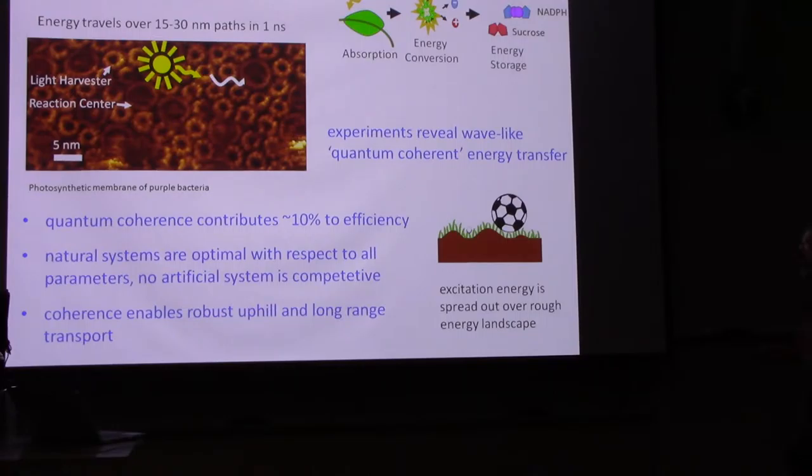Now, there's a lot of theoretical work done on this. A lot of theoretical work indicates that this coherence contributes about 10% to the efficiency. It also shows that natural systems are optimal with respect to all parameters of the system. And we also know experimentally that there's no artificial system that's competitive with this efficiency here. There's no photovoltaic system or any kind of artificial system which has this kind of efficiency to the initial step of the absorption plane. And this I'll say a little bit about at the end. This is one of the advantages we believe that's actually the critical advantage that's conferred by the coherence.